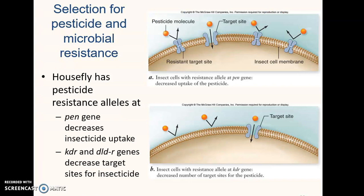Another driving force behind natural selection is pesticides and antimicrobials. Widespread use of these chemicals can lead to widespread resistance. At this point, over 500 species of plants, insects, bacteria, and fungi have some type of resistance against pesticides. Usually animals and other organisms are resistant to one mode of action, one type of pesticide, but multiple resistance is also possible, such as in the housefly.